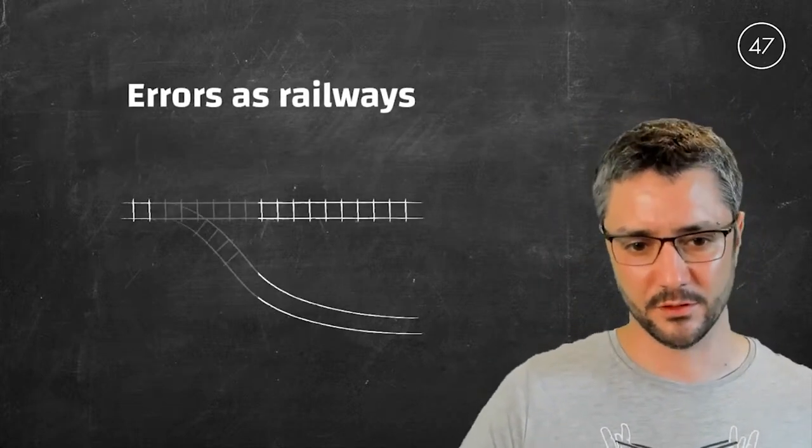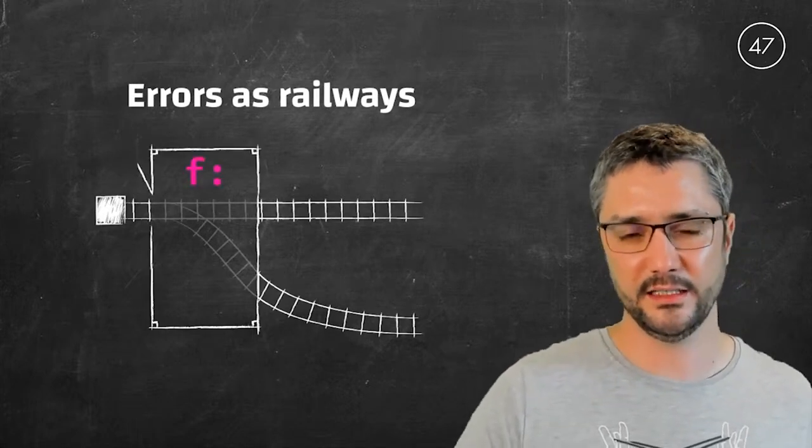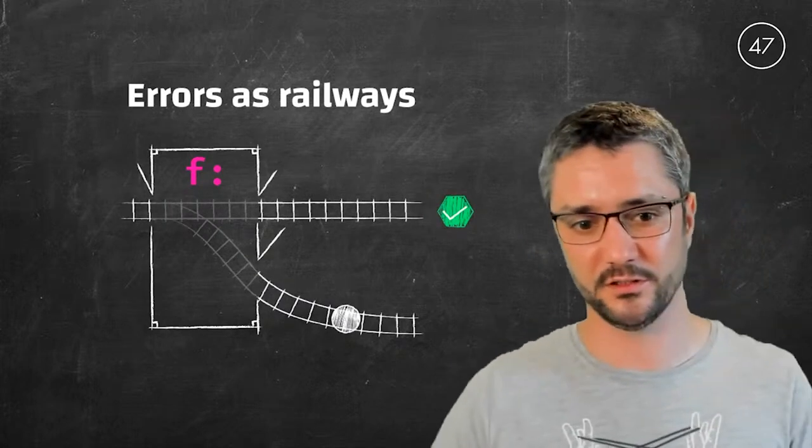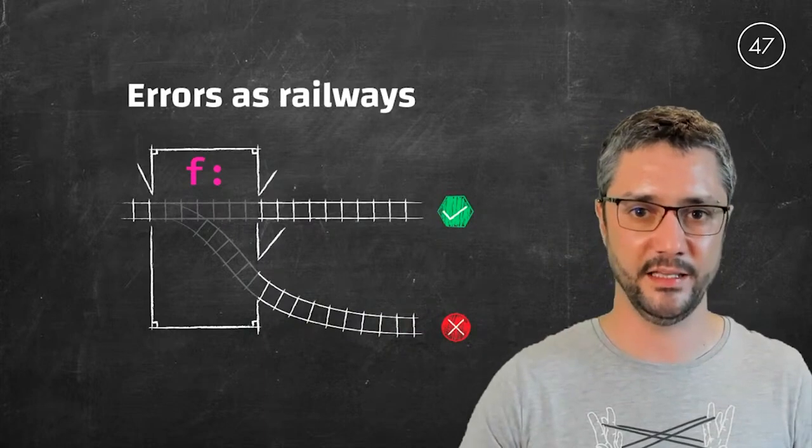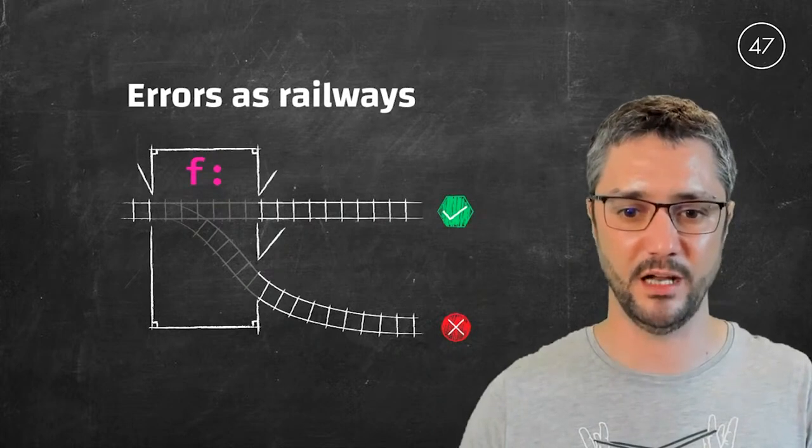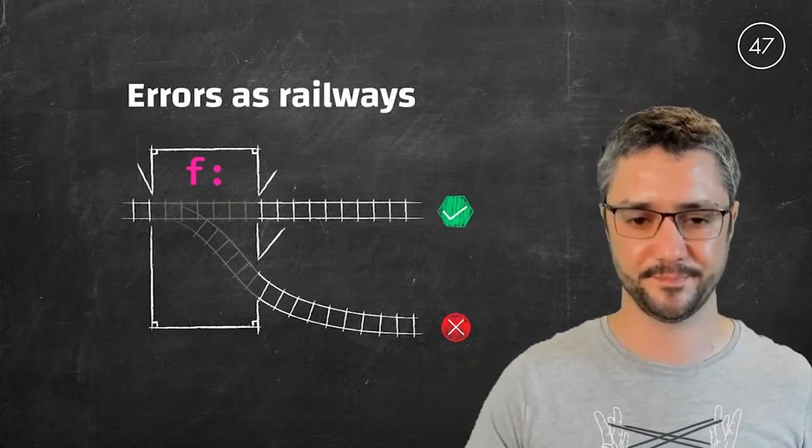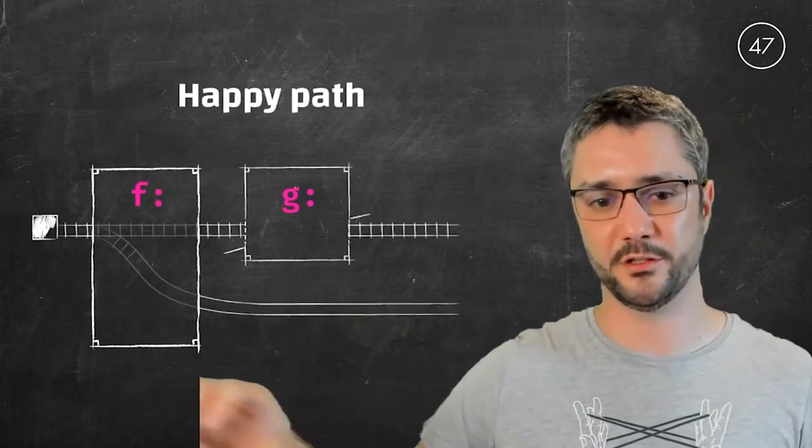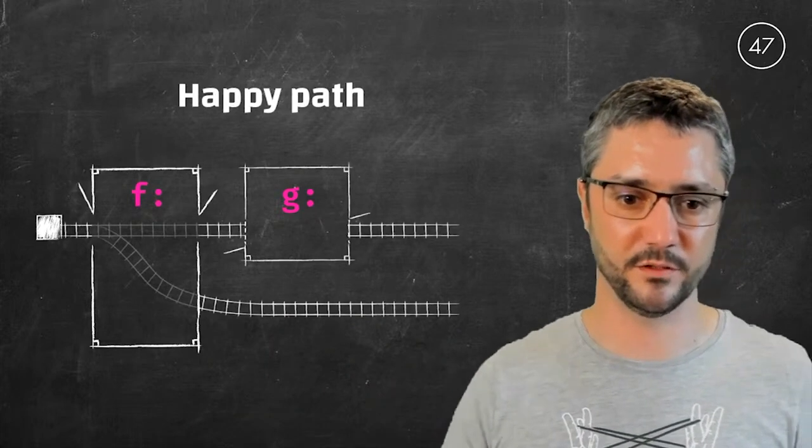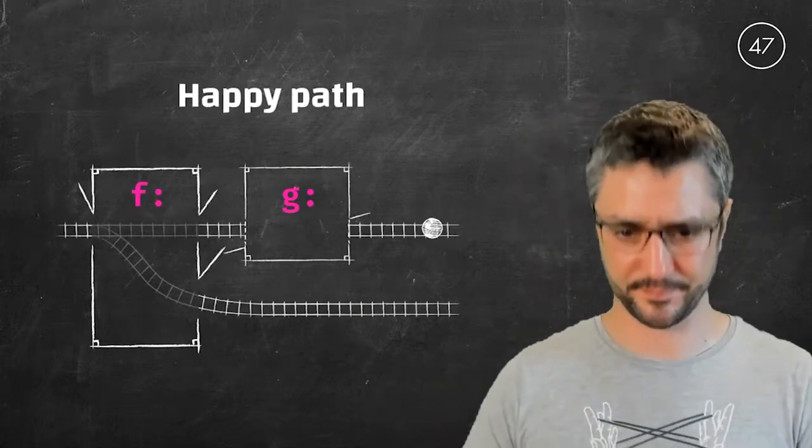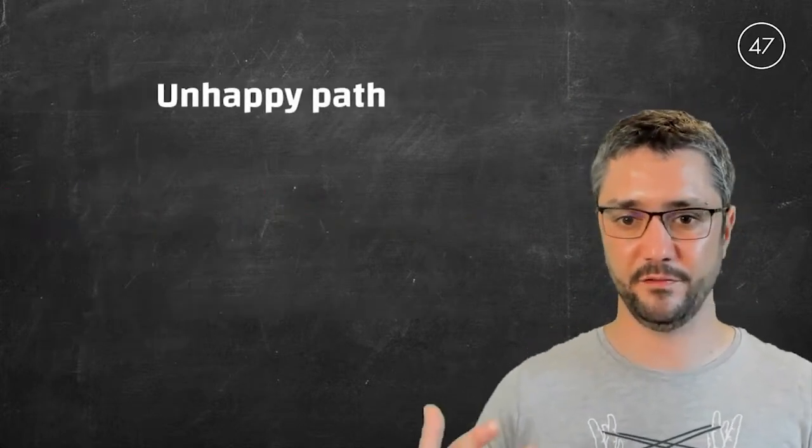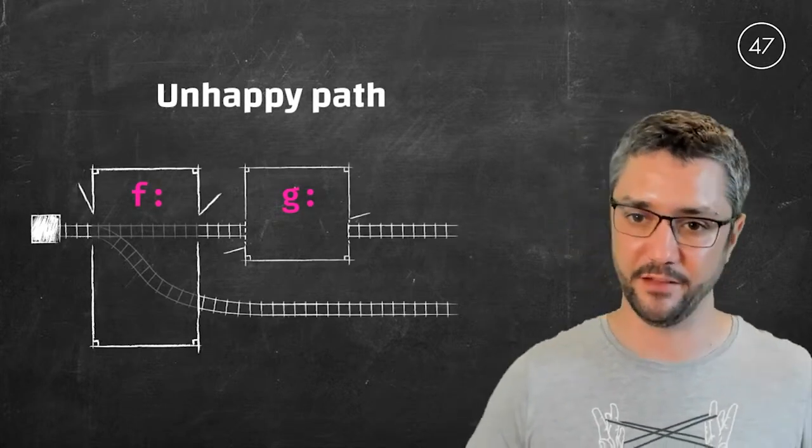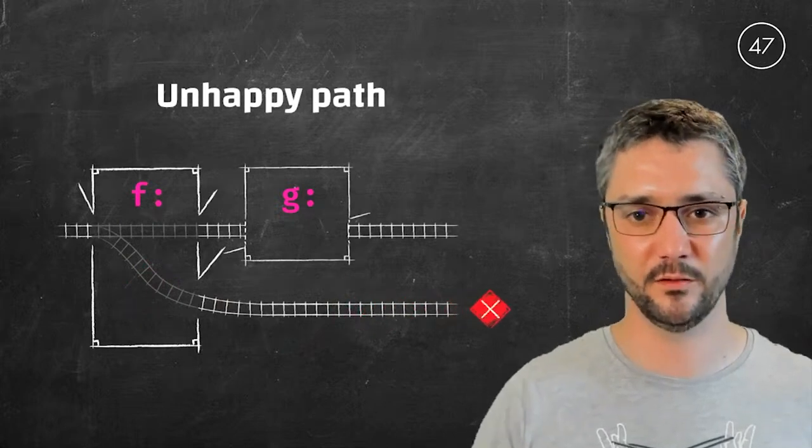There is a well-known metaphor about functions that may fail. It is to see them as railways. So, for example, function f that returns an either can be seen as a track that splits in two different tracks. One for the success case and one for the error case. And of course, I can, if I want, plug new computation on the happy path. So, for example, here the function g will be evaluated only if the function f returns a success. And if it doesn't return a success, the function g won't be evaluated. So I still have my error context. I have two tracks. But I still can do things with my successful results.